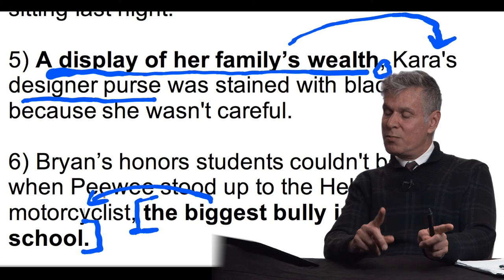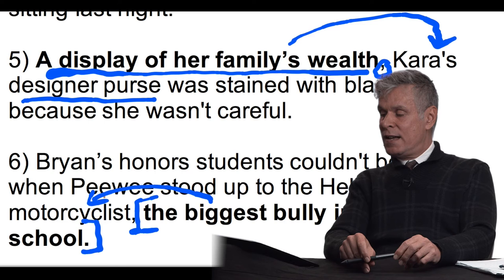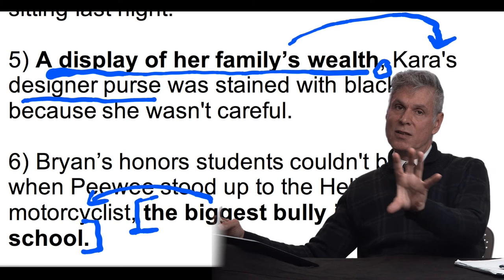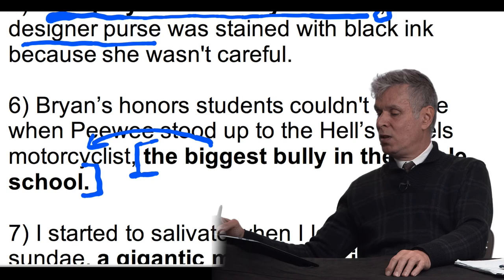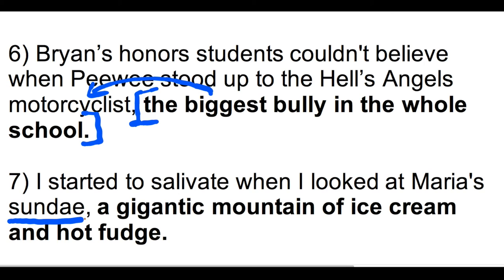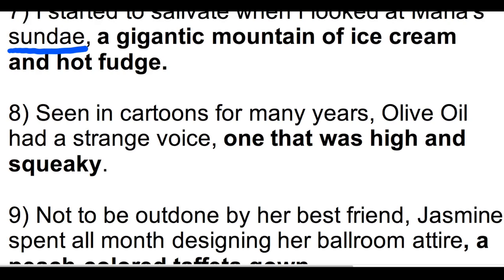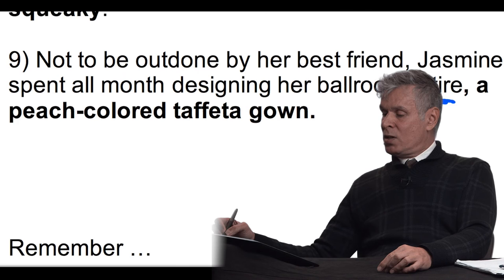The beginning one — number five — is the one I see the least, so try doing that. In all cases, you can take the appositive out of the sentence and the overall coherence stays the same. It's extra information — that's important. Here are more end examples: 'a gigantic mountain of ice cream and hot fudge' tells you more about Maria's Sunday; 'one that was high and squeaky' tells you about a strange voice; and 'a peach-colored taffeta gown' tells you more about the ballroom attire.